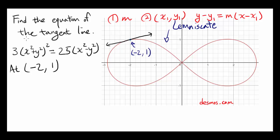Find the equation of the tangent line, given the equation: 3 times (x squared plus y squared) squared equals 25 times (x squared minus y squared). This kind of graph is called a lemniscate and it looks like an infinity sign. This graph is from desmos.com, and you want to find the equation of the tangent line to the graph at the point negative 2, 1.